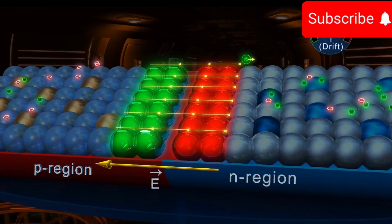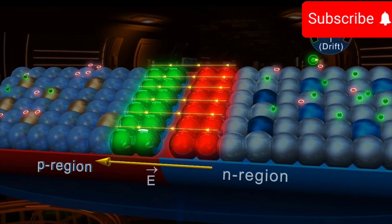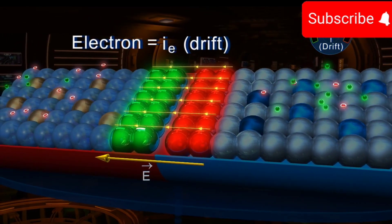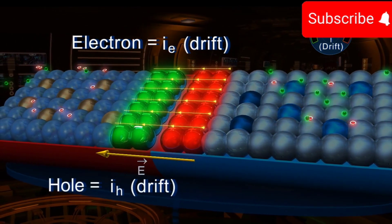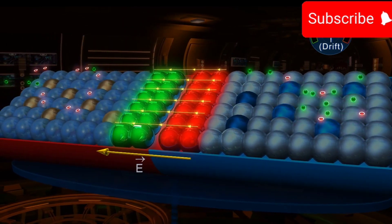This current is called the drift current. For electrons, it is IE drift and for holes it is IH drift, and it depends upon the number of carriers drifted.